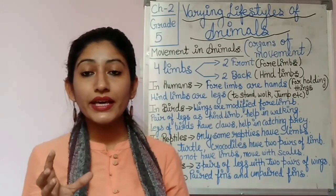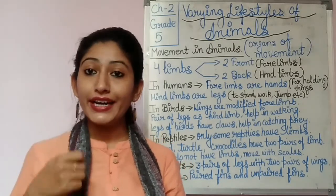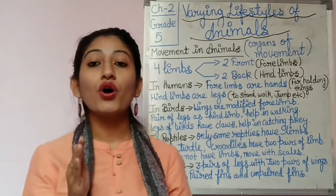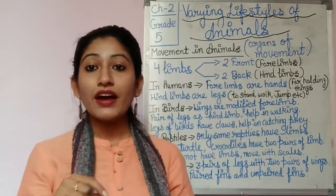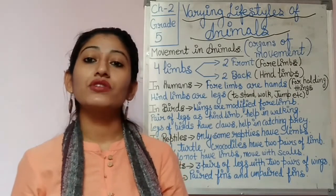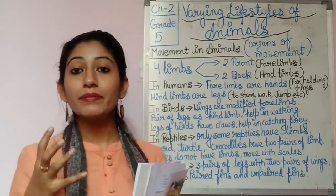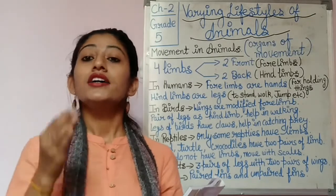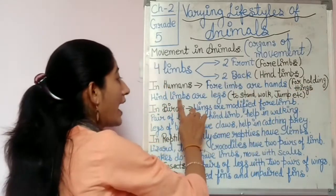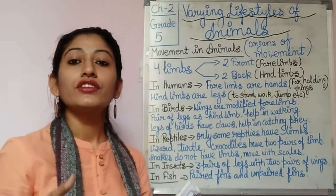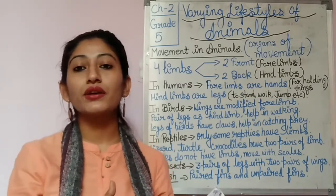In mammals, especially in human beings, forelimbs are used for holding and working while hind limbs are used for movement. Similarly, animals like monkey, chimpanzee, and gorilla act like human beings — they also use their forelimbs for holding things and their legs to stand, walk, and jump.